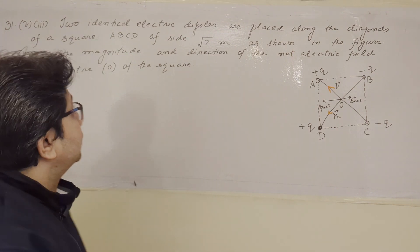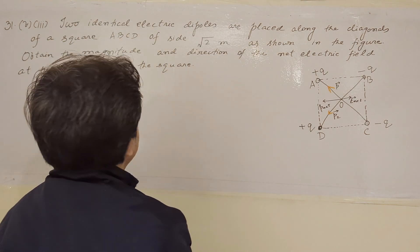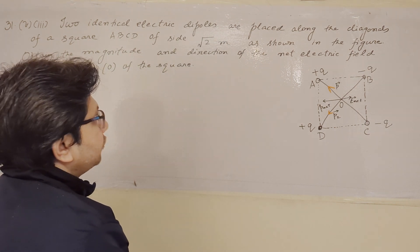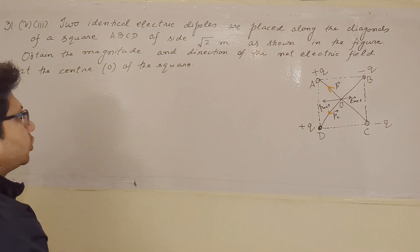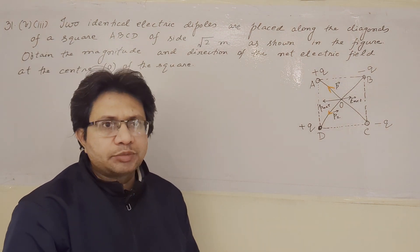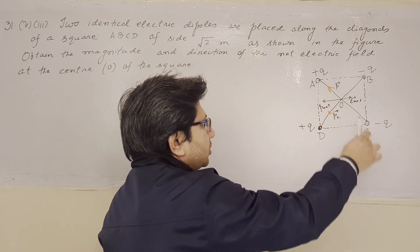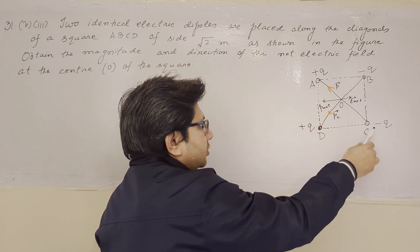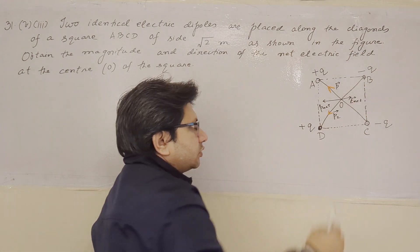Hello students. The question is: two identical electric dipoles are placed along the diagonals of a square ABCD of side square root 2 meters, as shown in the figure. Obtain the magnitude and direction of the net electric field at the center O of the square. This problem is based on the topic of electric field due to a dipole. There are two dipoles — the first dipole has plus q and minus q charges, and the second dipole also has plus q and minus q charges.